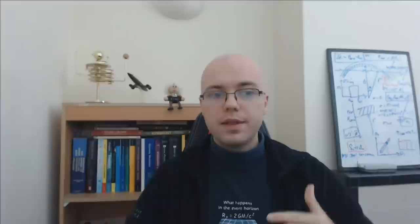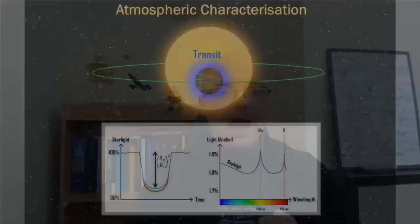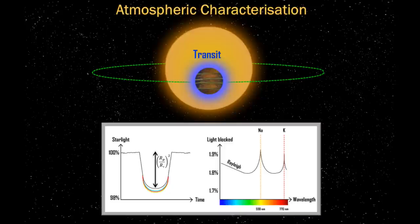In the case of exoplanets, when blue light goes into the atmosphere of the planet it bounces about, flies off in a random direction, and we're less likely to observe it. That's why we see the planet appearing slightly larger at bluer wavelengths — we get a characteristic slope, which we call the Rayleigh slope. But what's really exciting is that at certain colours, we pick up absorption features due to chemical species. At yellow wavelengths, the planet suddenly appears a lot larger due to sodium in the atmosphere absorbing the light.